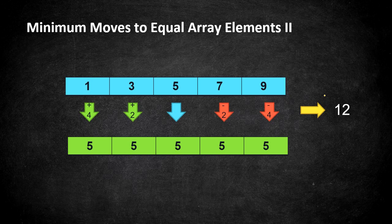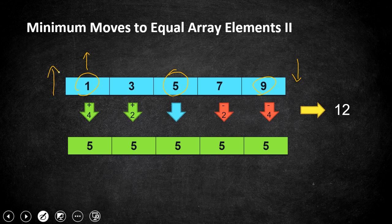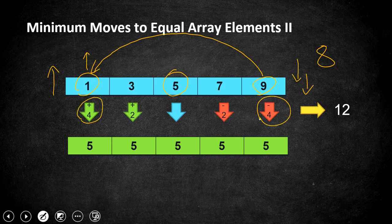Method 2: instead of computing a median, we subtract edge values from each other. If you bring a lesser value up and a higher value down to meet at the middle, the total operations equal their difference. For example, 9 minus 1 equals 8 steps — four steps up and four steps down to reach five. Moving inward, 7 minus 3 equals 4 steps, two each direction to reach five.